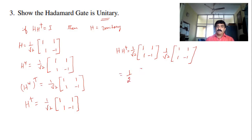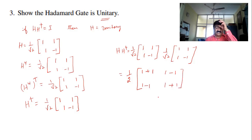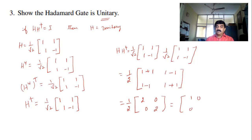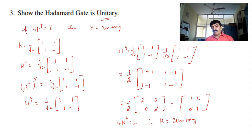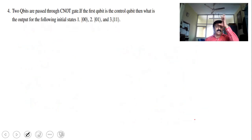H×H† = 1/√2 × [1, 1; 1, -1] times 1/√2 × [1, 1; 1, -1]. The 1/√2 × 1/√2 becomes 1/2. Then: first row, first column = 1×1 + 1×1 = 2; first row, second column = 1×1 + 1×(-1) = 0; second row, first column = 1×1 + (-1)×1 = 0; second row, second column = 1×1 + (-1)×(-1) = 1+1 = 2. So 1/2 × [2, 0; 0, 2] = [1, 0; 0, 1] = I. Therefore H×H† = I, which means H is unitary.